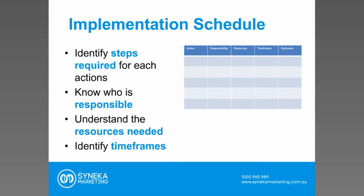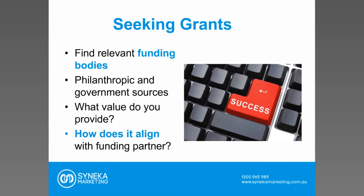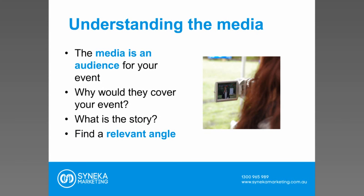A marketing plan needs to include an implementation schedule — identify the steps required for each action, knowing who is responsible and the resources required, both human resources and financial resources. It comes back to timeframes — identify each action required to achieve that strategy. If it's an event, look at each step: from when posters need to be produced, through to when invites to VIPs need to be issued, to when the media needs to be contacted, through to the actual event itself. If you're seeking grants, find those relevant funding bodies and align it with the value you're providing.